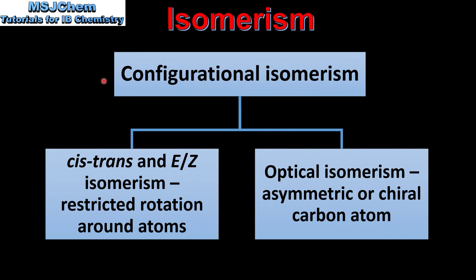Configurational isomerism can be divided into cis-trans and E/Z-isomerism, and optical isomerism. Optical isomerism occurs in compounds that have an asymmetric or chiral carbon atom. Cis-trans and E/Z-isomerism occurs in compounds that have restricted rotation around atoms, due to a carbon-to-carbon double bond or a cyclic structure.